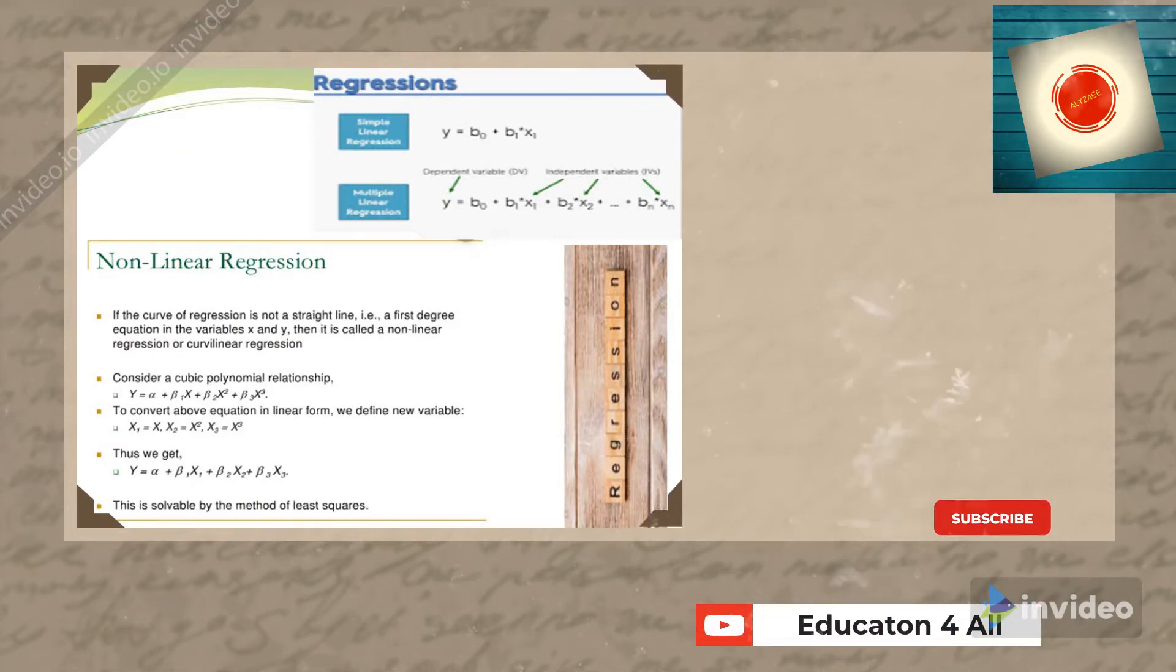The simple linear regression equation is y = b0 + b1x1. For multiple linear regression, y = b0 + b1x1 + b2x2, and so on to bn·xn.